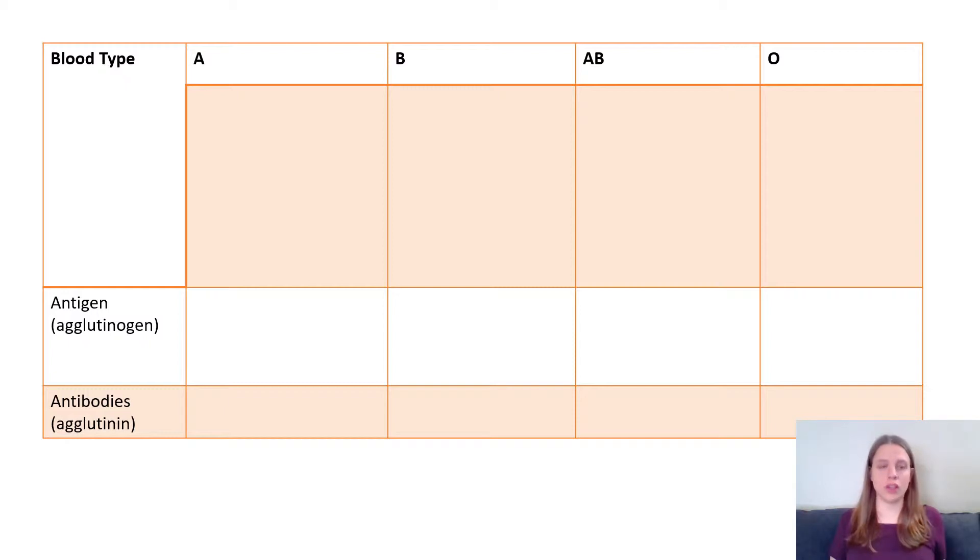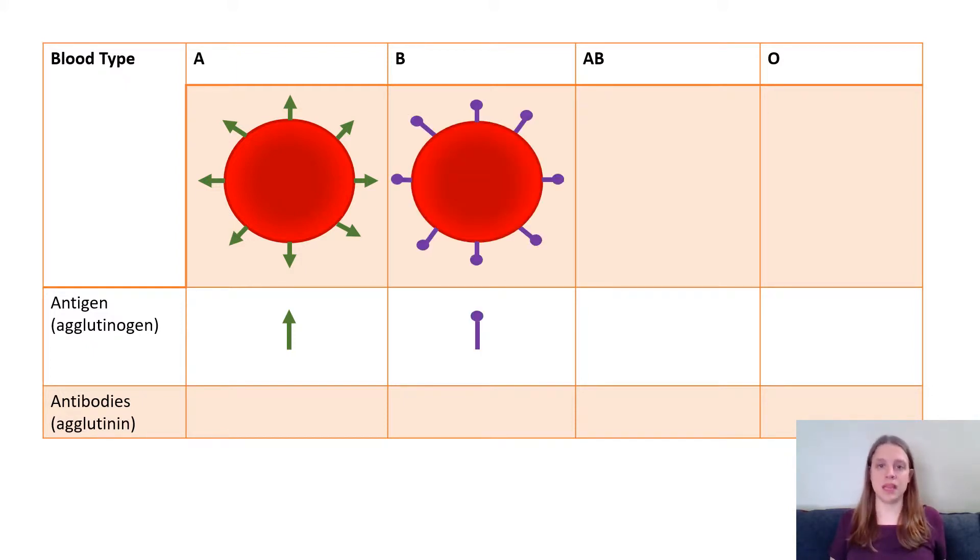So when we're talking about blood types, we're referring to what kind of antigens a person has on their red blood cells. So a person with type A blood will have type A antigens. Antigens are like little identification tags hanging off of a cell that allows your body to recognize that cell as belonging to your body. So a person with type B blood will have B antigens.